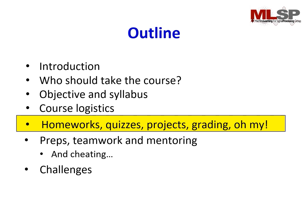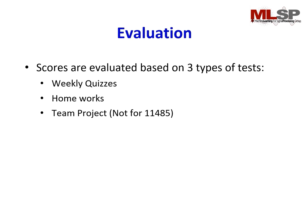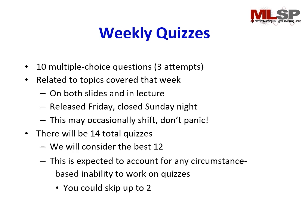Now we'll cover what the homeworks, quizzes, and projects are, as well as the grading. Scores are evaluated based on three types of assessments: weekly quizzes, homeworks, and team projects. Team projects don't apply for the undergrad course 11-485. For the weekly quizzes, we have 10 multiple choice questions and you will have three attempts. The quizzes are related to topics covered in lectures that week — they will contain content from both the slides and the lectures. They are released every Friday and close on Sunday night, though this may occasionally shift. There will be 14 total quizzes and we will consider the best 12, accounting for any circumstances that prevent you from completing a quiz — so you can skip any two.